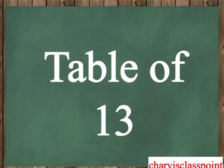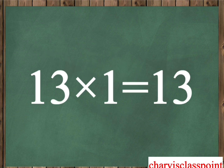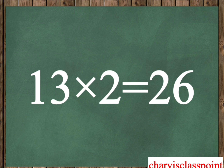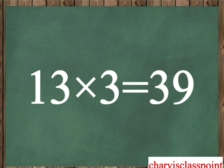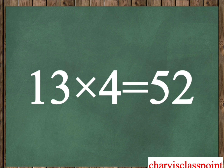Table of Thirteen. Thirteen one is thirteen. Thirteen two is twenty-six. Thirteen three is thirty-nine. Thirteen four is fifty-two.